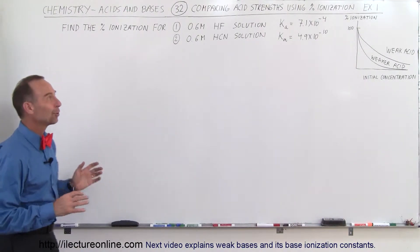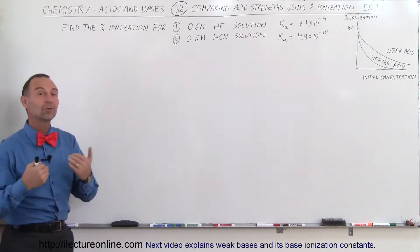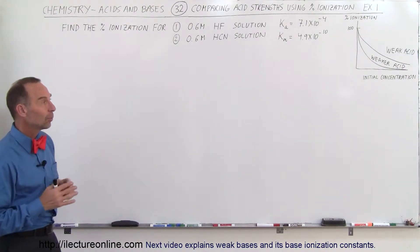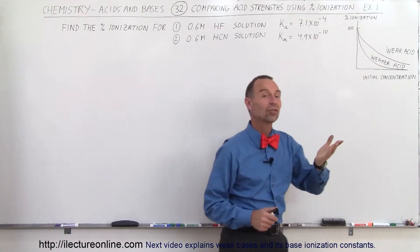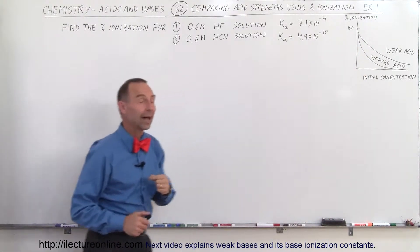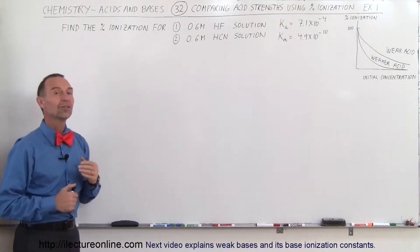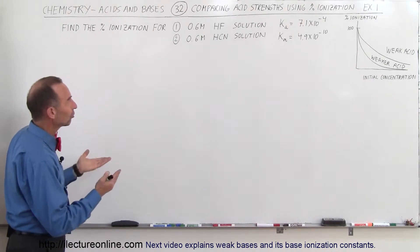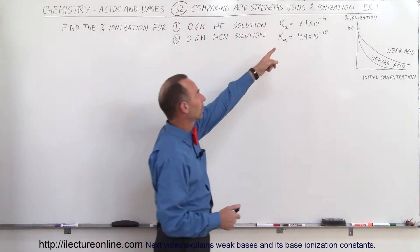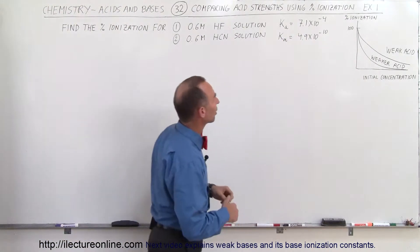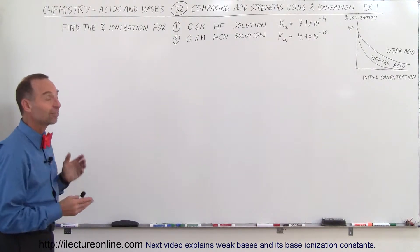Welcome to ElectronLine. We're going to do an example where we compare two acids — one that's weak and one that's much weaker — to see how, when they start with the same initial concentration, one will have a higher percent ionization and one will have a lower percent ionization. We have hydrofluoric acid and hydrocyanic acid, both starting at 0.6 molar concentration. One has a larger ionization constant and the other a smaller one.